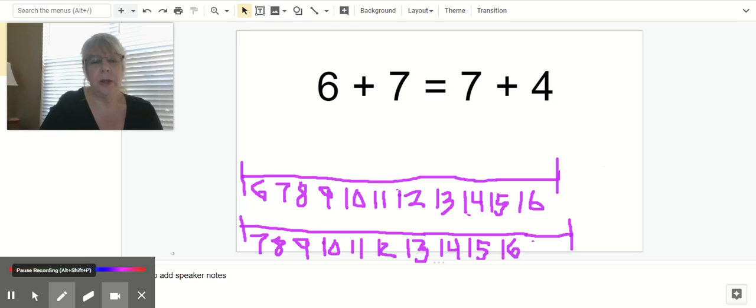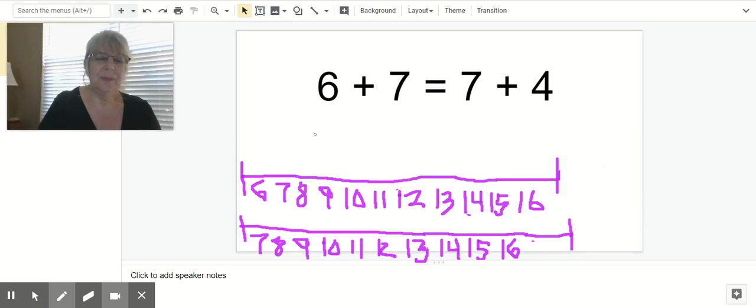So, we have the equations 6 plus 7 is equal to 7 plus 4. Now, we know, and I know you know, I can hear you telling me, Ms. McCart, we've done this a ton of times. Well, that's true. But we have to remember as a review that we have to prove it.